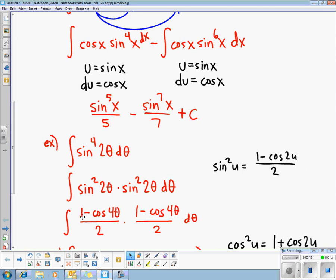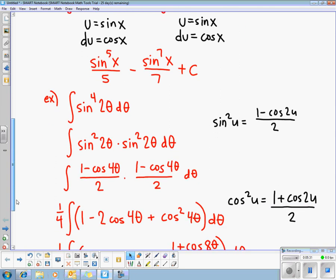And then I use this trig identity twice. Sine squared of two theta is one minus the cosine of four theta over two. Make sure you understand why that's a four, because whatever my argument is, two theta in this case, needs to get doubled due to the identity. So I end up with two separate trig identities that are multiplied together.